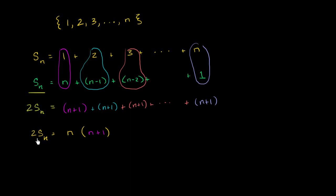And now, to solve for s sub n, to solve for our sum, we can just divide both sides by two. And so we are going to be left with the sum from one to n, this arithmetic sequence where we're just incrementing by one, starting at one, is going to be equal to n times n plus one over two.